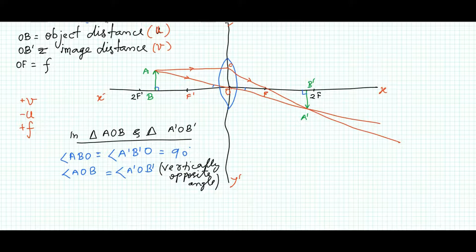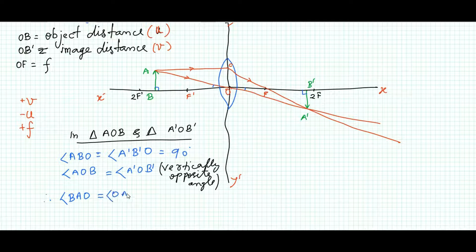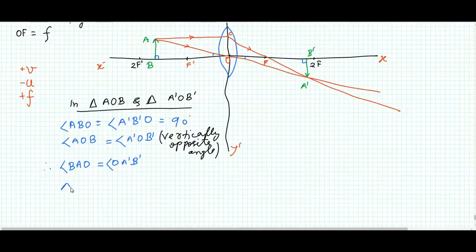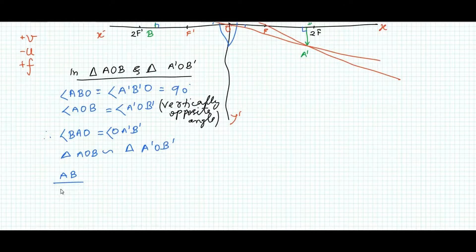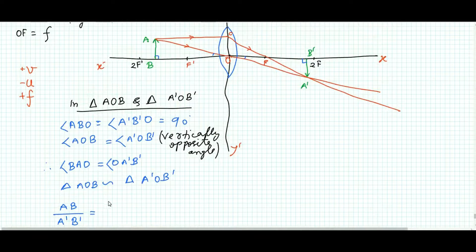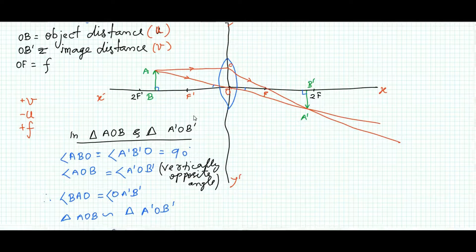Since two angles of triangle AOB are equal to two angles of triangle A'OB', the third angles are also equal. Therefore triangle AOB is similar to triangle A'OB'. From this similarity, we can write: AB / A'B' = OB / OB'. This is equation number one.